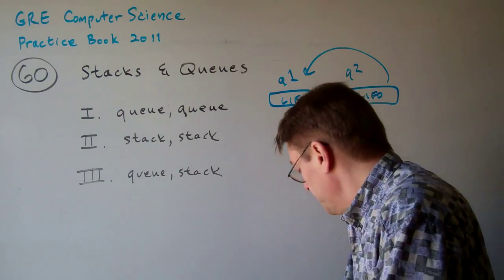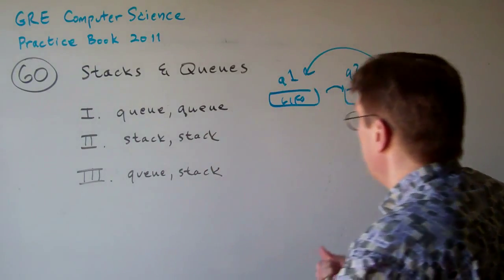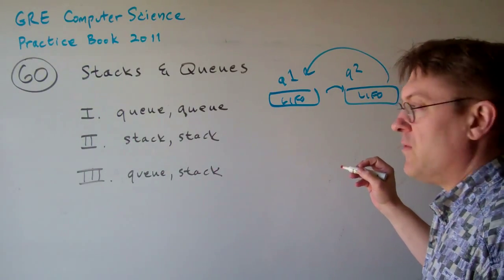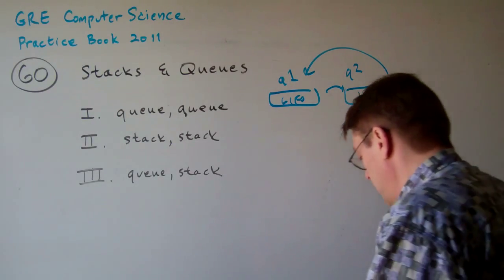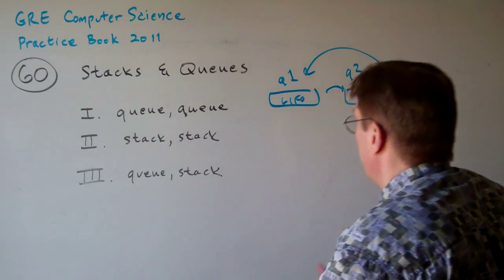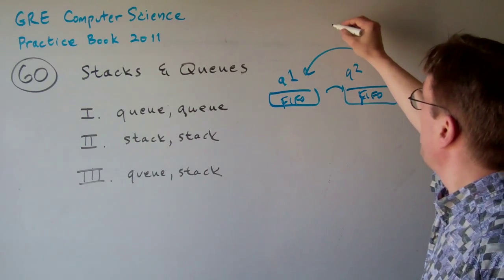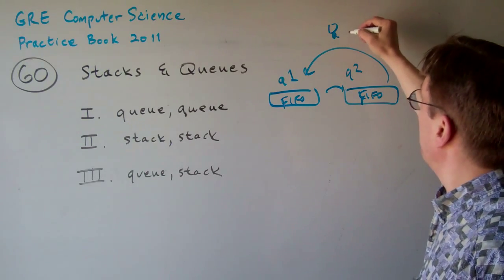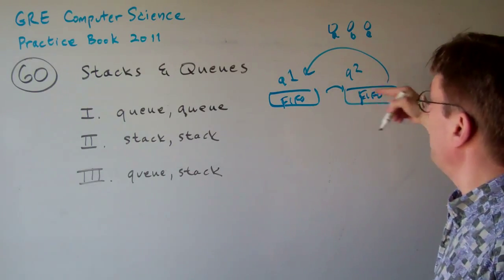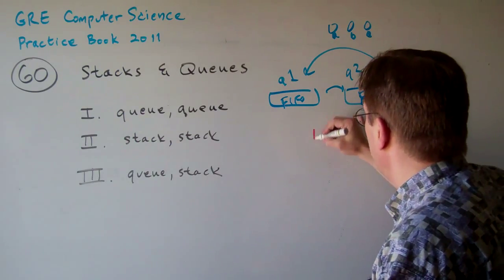Now what about a stack? A stack is last in, first out — LIFO. Sorry, to clarify: the queue is first in, first out (FIFO). So with a queue, if you have items A, B, C, you pull them out and put them in the auxiliary structure in the same order. Now for the stack, it's last in, first out.